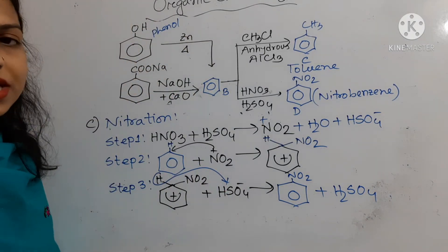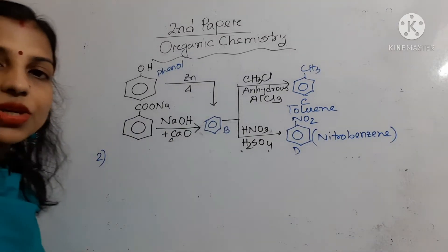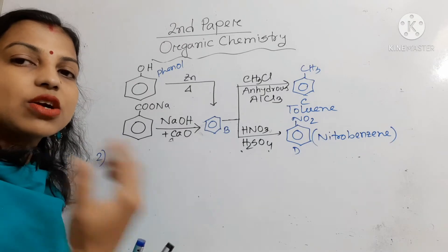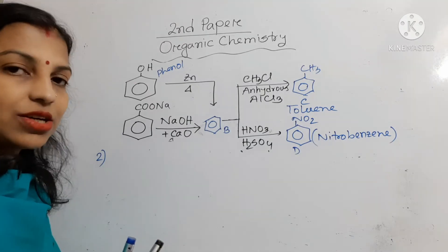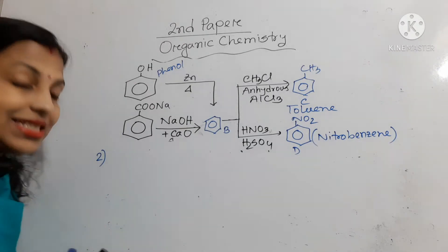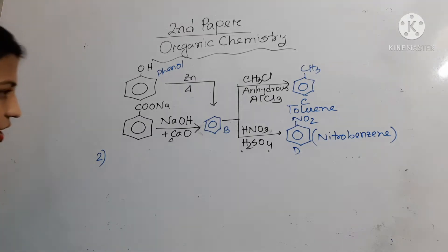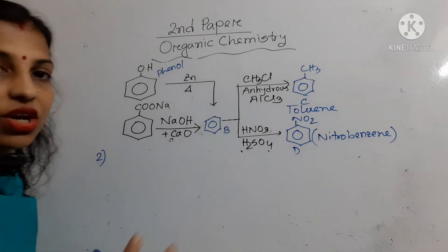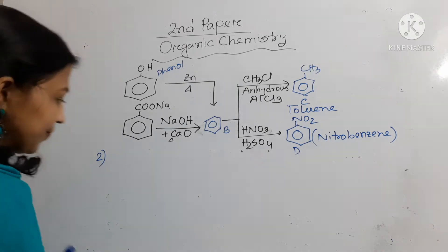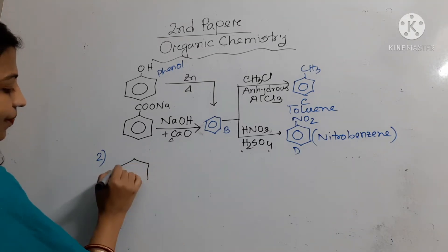Now, the second question asks to write the equation for when benzene is converted to glyoxal. Benzene is converted to glyoxal by the ozonolysis reaction. I have written the ozonolysis reaction of benzene here.